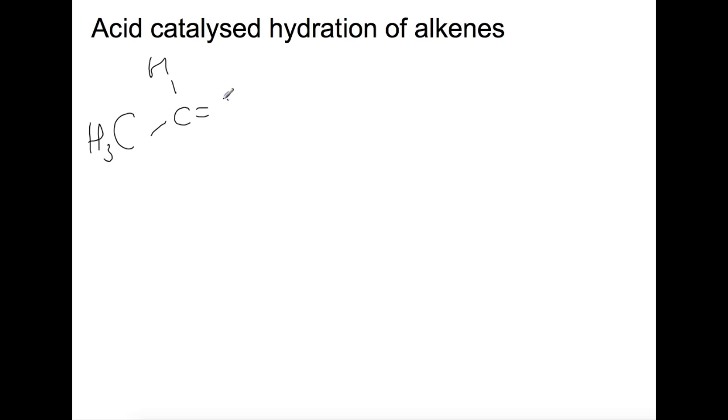Here we have propene and we're going to add water onto this to produce an alcohol. The first step is to use the acid. The double bond which has a lot of electrons moves out here to get to the acid. This is an electrophilic addition.